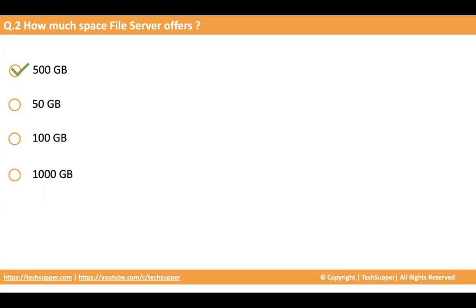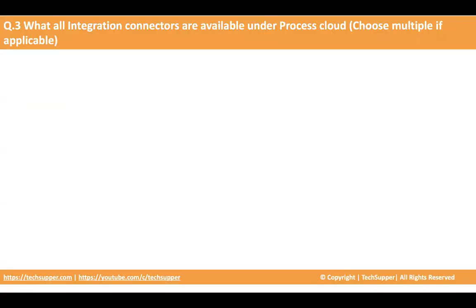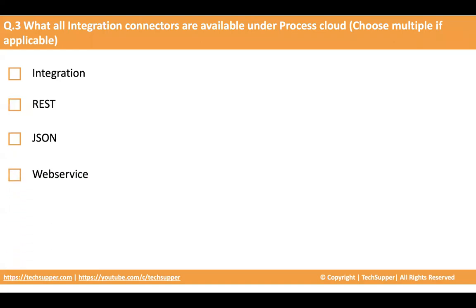The third question: what integration connectors are available under Process Cloud? Choose multiple if applicable. The options are: Integration, REST, JSON, and Web Service. If you don't know the answer, you can go to Process Cloud, create a process application, go to the integrations navigation, and see what types of connectors you can create to validate the answer.